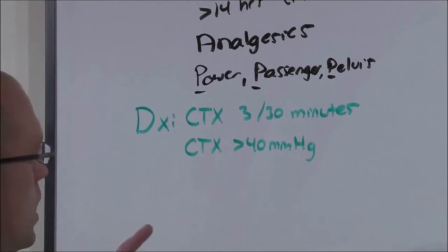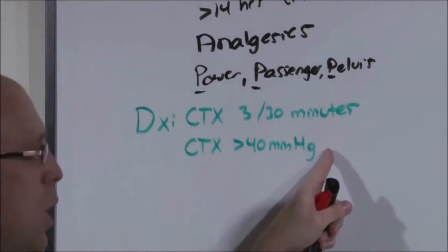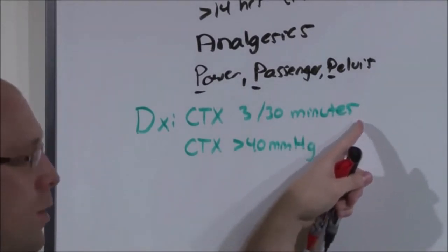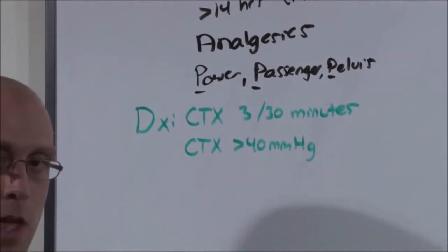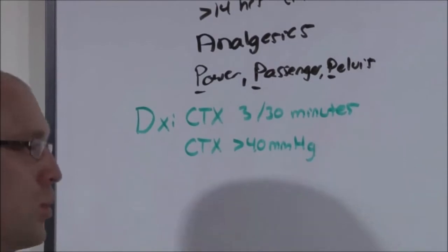If the patient has inadequate contractions, that is they're not powerful enough or they're not frequent enough, we can augment her. If we go after augmentation and her contractions are sufficient, we're only going to get into the side effects of Pitocin, such as uterine rupture or uterine inversion.